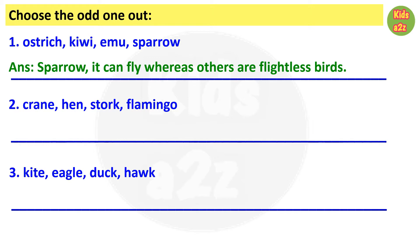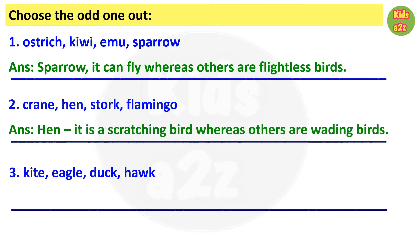Number 2: crane, hen, stork and flamingo. The odd one is hen because hen is a scratching bird whereas the others are wading birds. Hens have strong feet with three toes in the front and one at the back, and each toe has a sharp claw with which it scratches the ground to search for food. On the other hand, crane, stork and flamingo have very long thin legs with wide spreading toes.